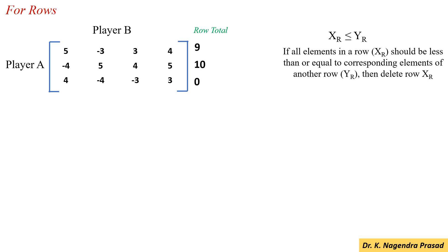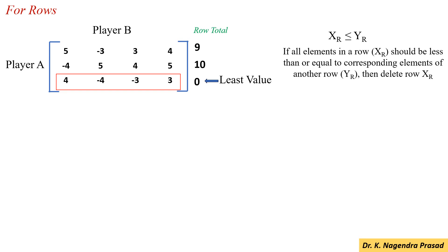Among these values, select the least value. And here, the least value is 0 for the third row. So, first we have to select the third row and compare it with the first row and the second row.